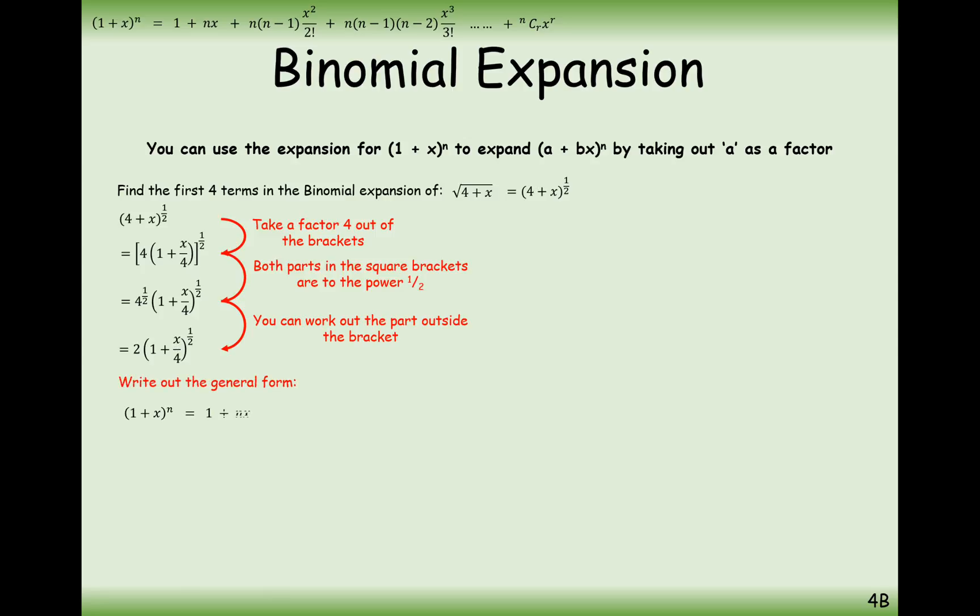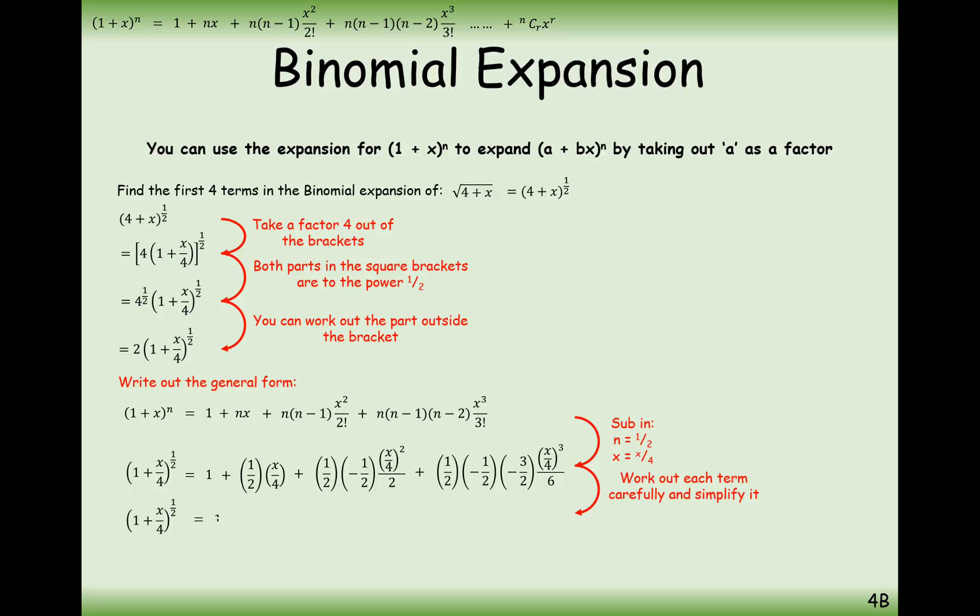Now we're going to substitute into the binomial expansion. We know that n is a half, x is now x divided by 4. Let's deal with the bracket part first and simplify using our calculators. And then the last thing is just double all of these terms because we've got a 2 at the front.